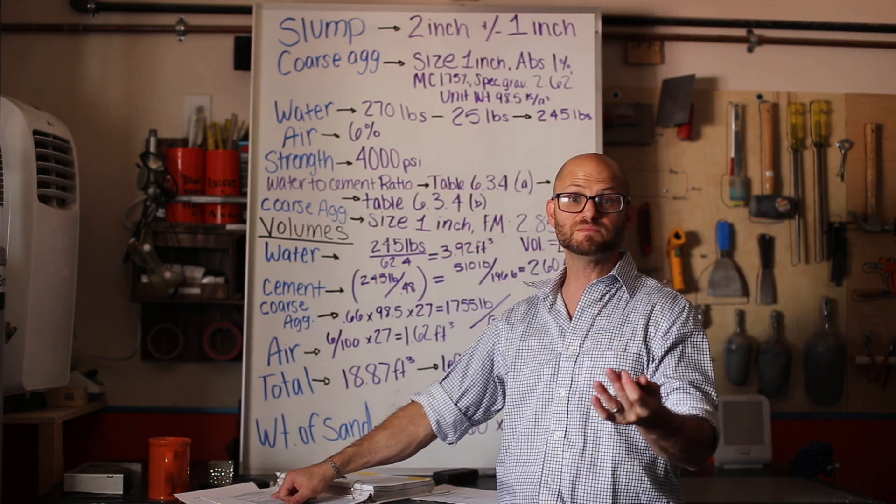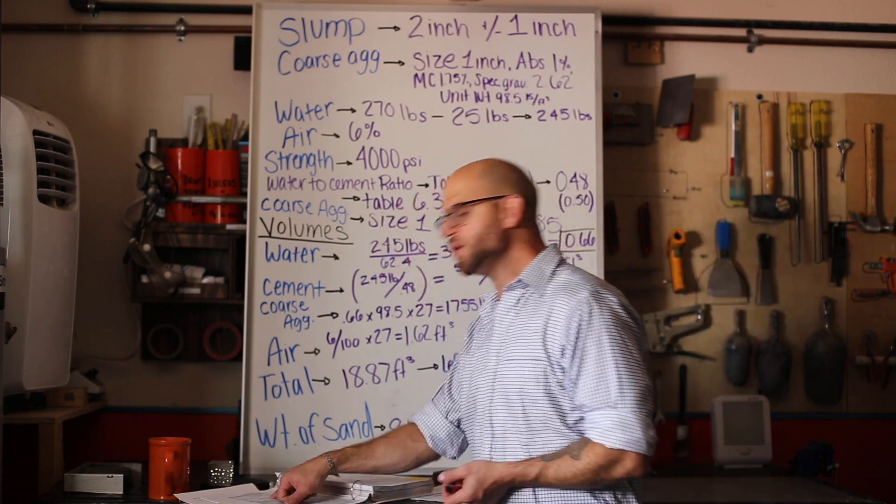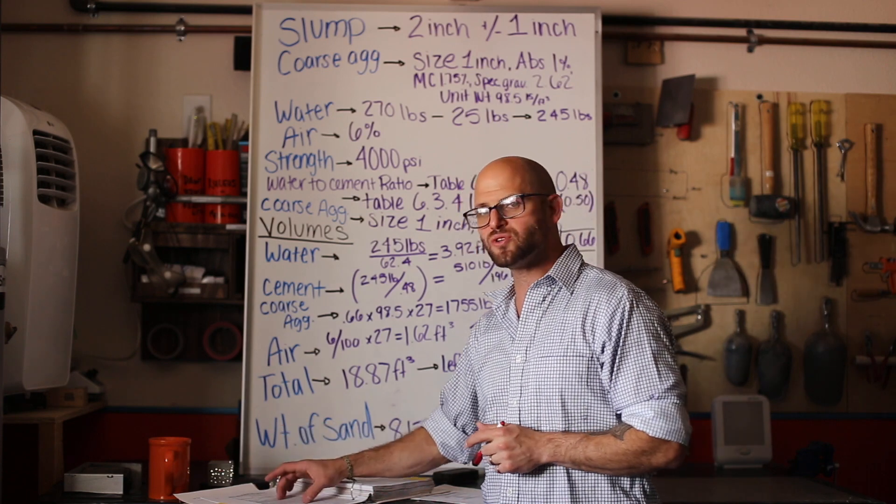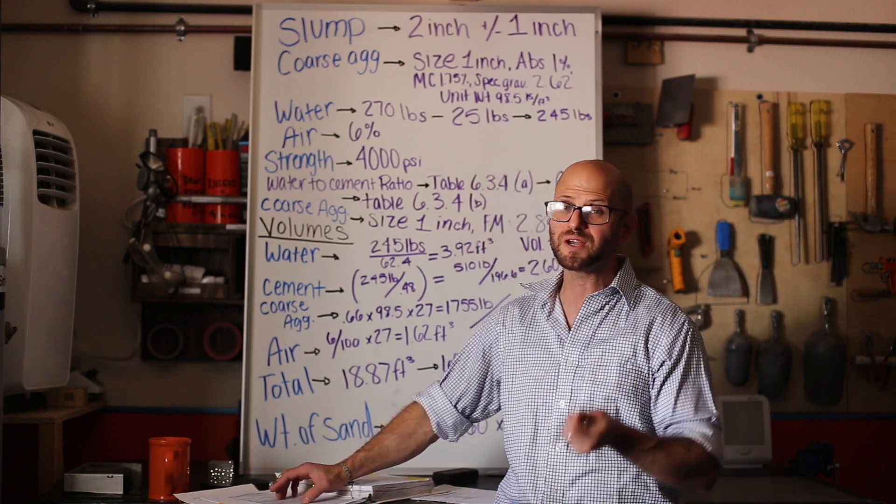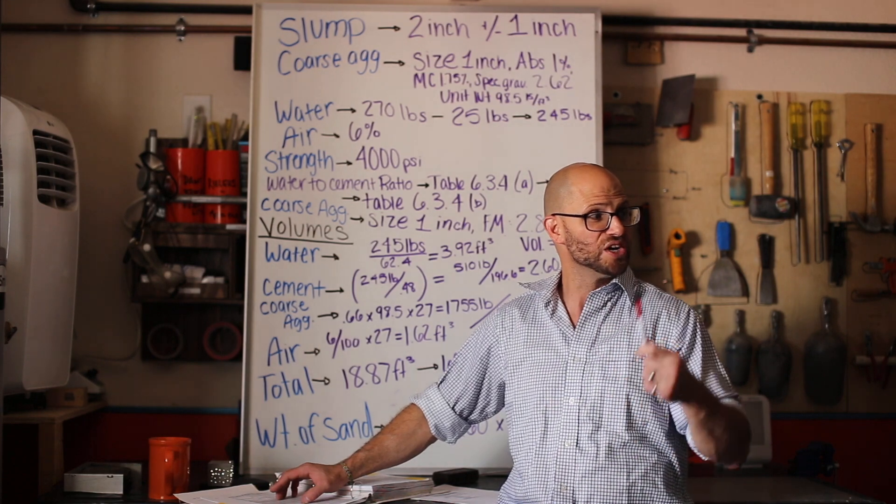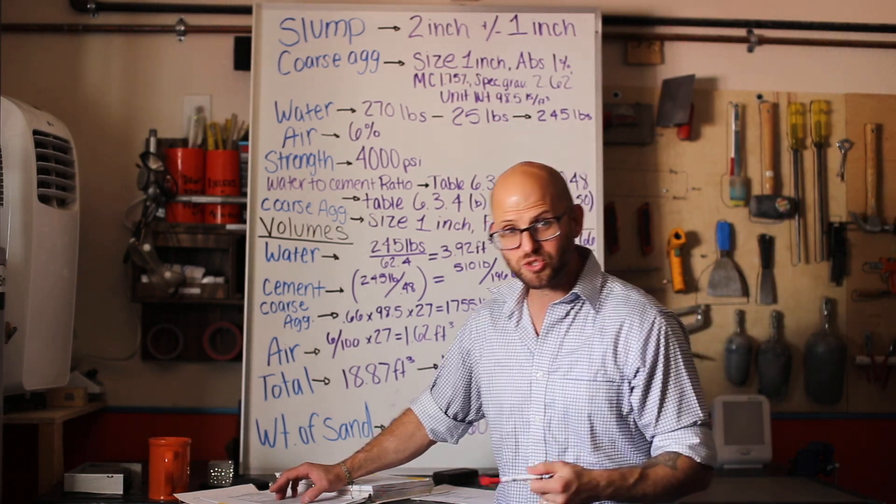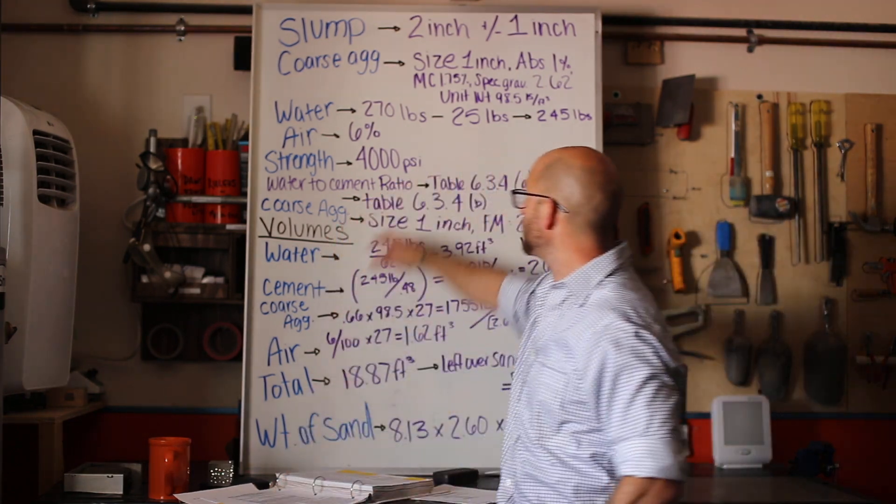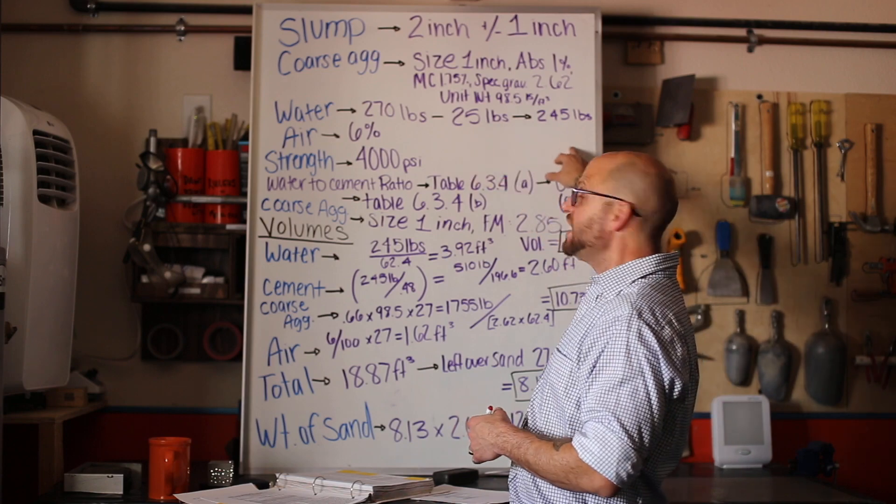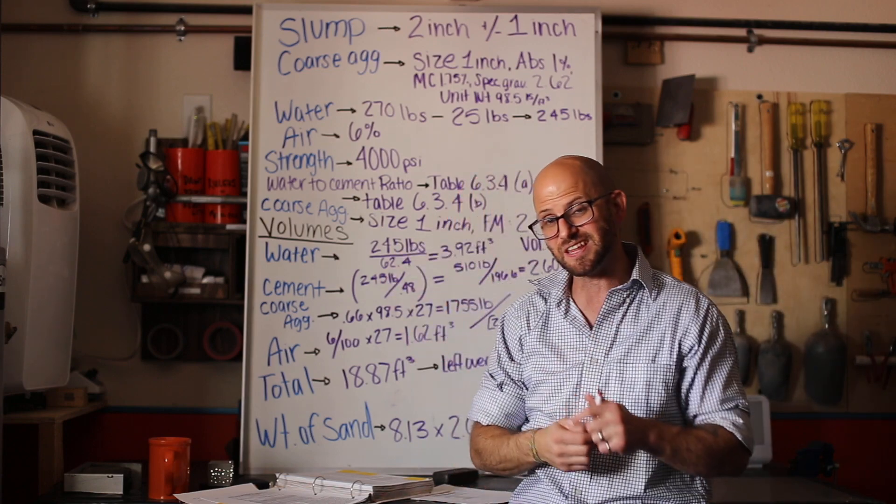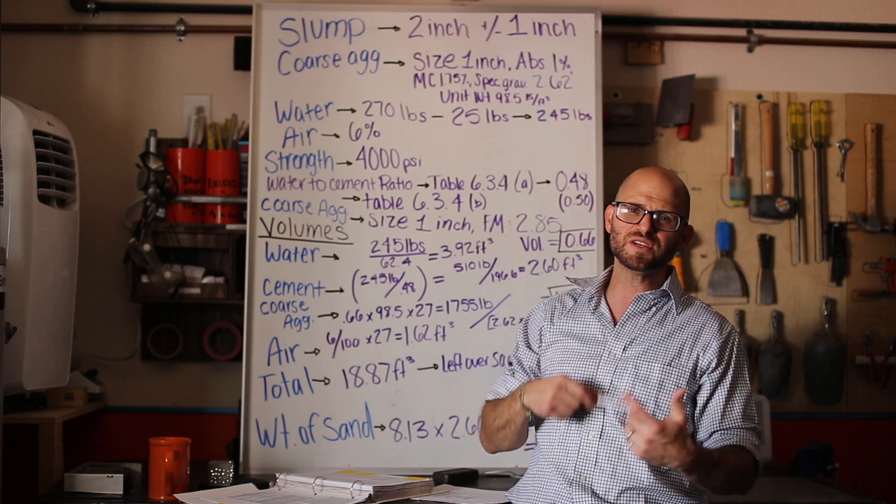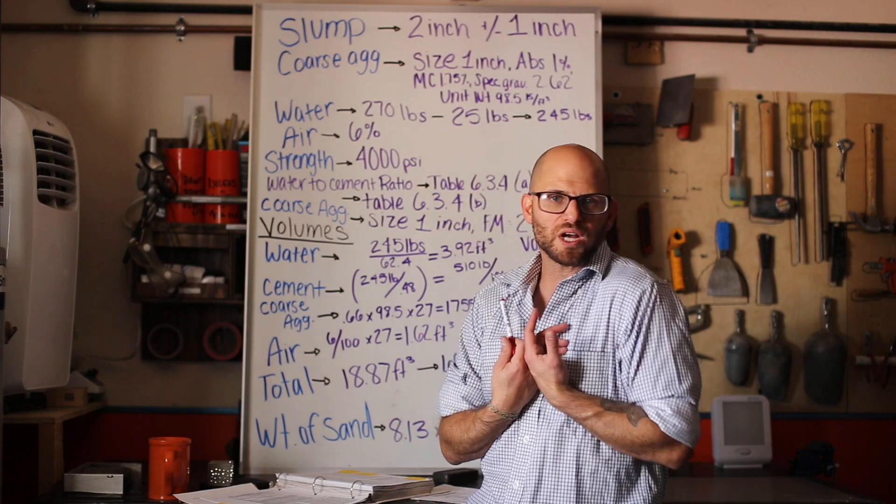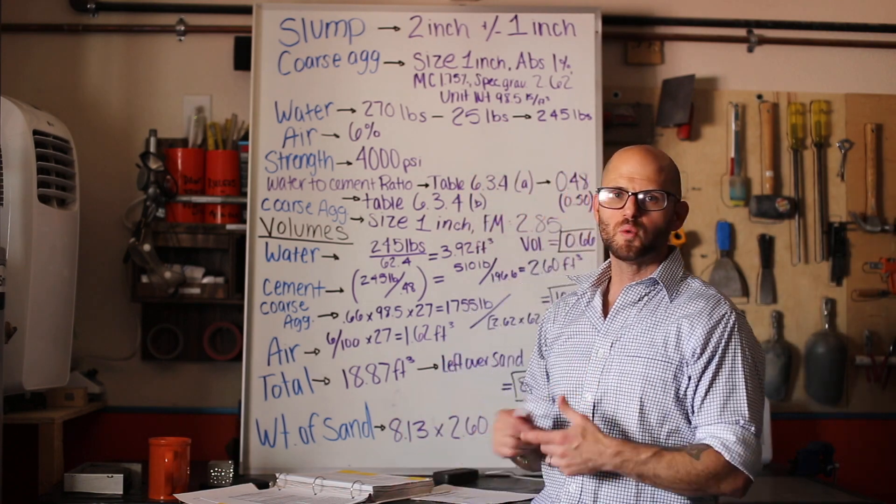With that one inch maximum aggregate size they gave us earlier, on slump which is three to four inches, or our maximum is three inches, we choose 295 pounds of total water. But there's a note underneath that tells you if you've got rounded rock you can subtract 25 pounds of water for air entrained concrete. That's 270 pounds of water minus 25 pounds from that note gives us 245 pounds of water.